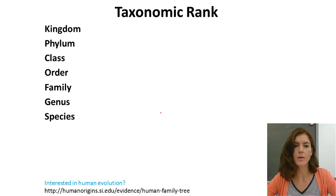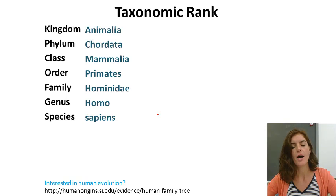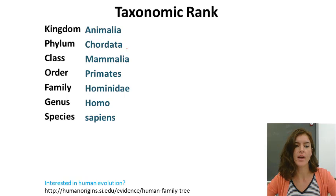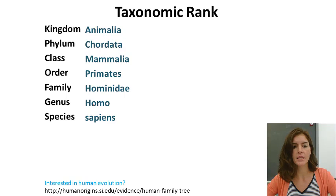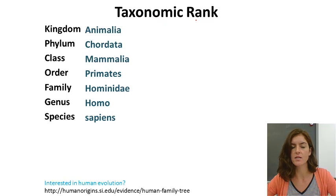I want to talk about taxonomic rank. Going from large to specific, we have kingdom, phylum, class, order, family, genus, and species — with species being the most specific. For Homo sapiens: we are part of the animal kingdom, we have a spinal cord so we're in the Chordata phylum, we are mammals in class Mammalia, primates as our order, hominids as our family, genus Homo, and species sapiens. We write it as Homo sapiens.